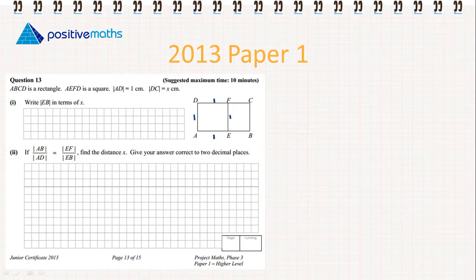So if AEFD is a square then all of those measures are going to be equal to 1. If DC is x then we'll draw a line and just put x. So we know that EB is equal to AB, the full length of the line, minus AE.